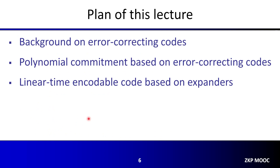To understand the schemes based on error-correcting codes, here's the plan of this lecture. There will be three segments. In the first segment, I'm going to talk about some background on error-correcting codes. In the second segment, I'm going to present polynomial commitment schemes using any error-correcting codes. And in the last segment, I'm going to talk about linear-time encodable codes based on expander graphs, and the polynomial commitment and zero-knowledge proof schemes using this type of code can have a linear-time prover in terms of field additions and multiplications.